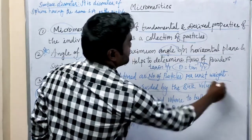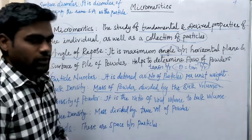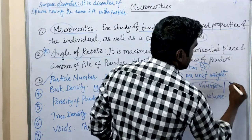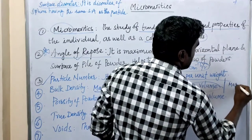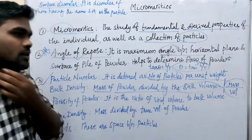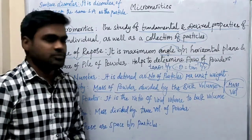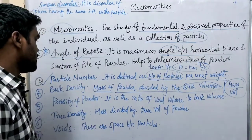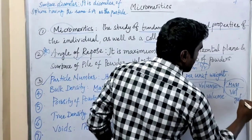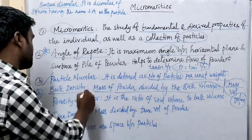Next, bulk density. It is defined as the mass of powder divided by the bulk volume, written as mass divided by volume. The units of bulk density are grams per mL.